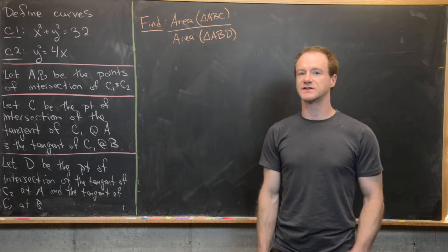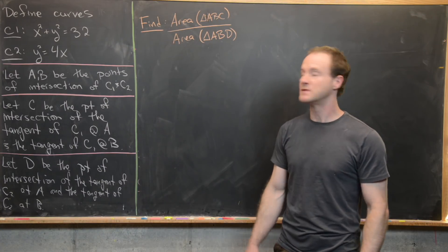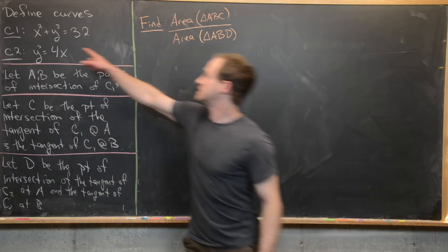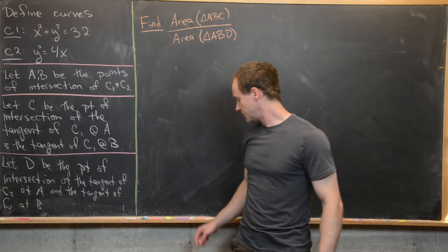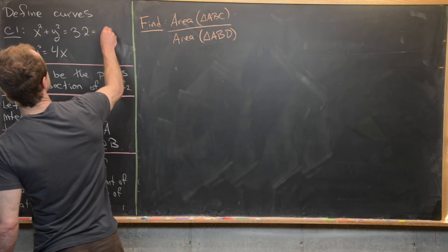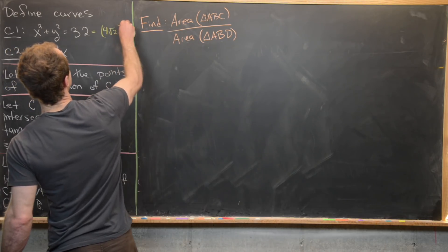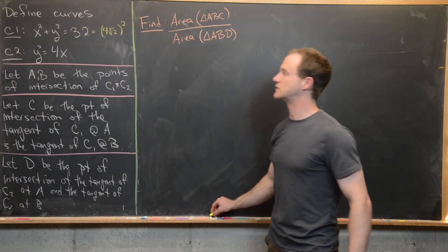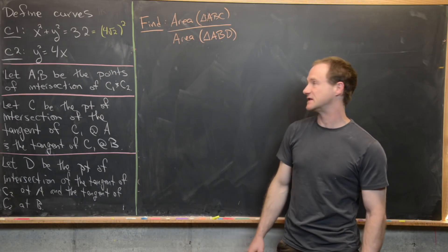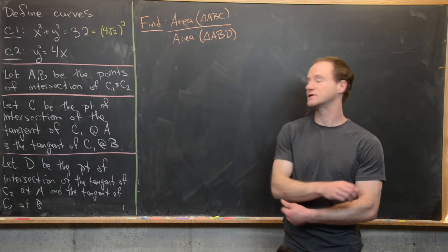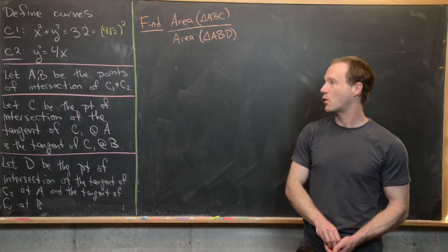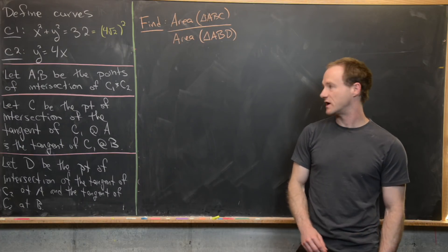We're going to use calculus to solve a nice little geometry problem. Let's define two curves: C1, which is x squared plus y squared equals 32. Notice that this is a circle of radius 4 times the square root of 2, because 4 times the square root of 2, squared, equals 32. The other curve is a sideways-facing parabola: y squared equals 4x. Let A and B be the points of intersection of C1 and C2.